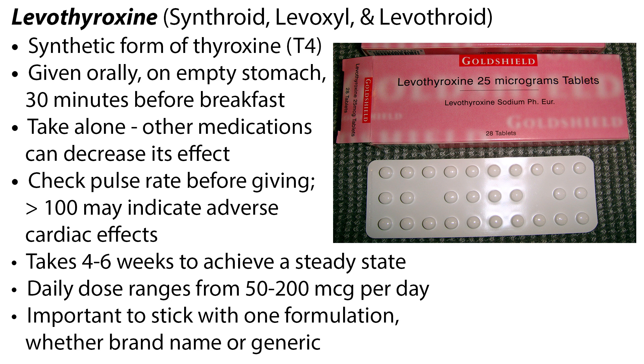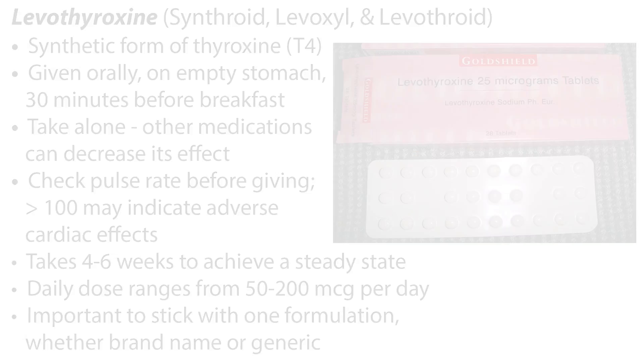Different formulations at the same dose can result in different TSH values in an individual. Therefore, whether brand name or generic, it is important for the patient to stick with one formulation. For congenital hypothyroidism or cretinism, drug therapy should be started within 6 weeks of birth and continued for life, or mental retardation may result.